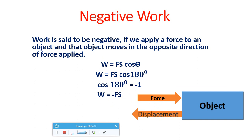In our daily life, an example of negative work is trying to stop a moving car. The car has greater force and your applied force is less, so you move in the direction of the car's motion while the car does not move in the direction of your force — angle between force and displacement becomes 180 degrees. Another example is frictional force, which is always negative because friction acts opposite to the direction of motion.